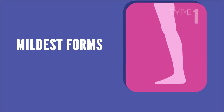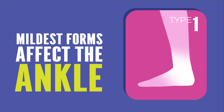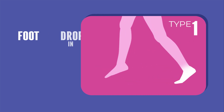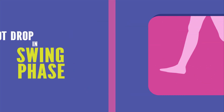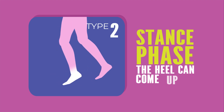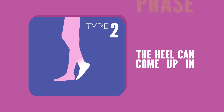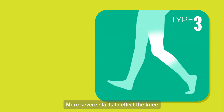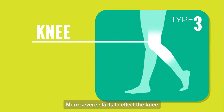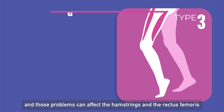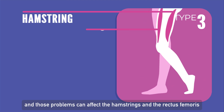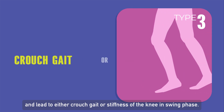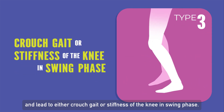The mildest forms affect only the ankle — for instance, with the muscles that pull the foot up, they can have a foot drop in certain ways. In stance phase, the heel can come up early and there can be what's called equinus toe. The more severe form starts to affect the knee, and those problems can affect the hamstrings and rectus femoris and lead to either crouch gait or stiffness of the swing phase.